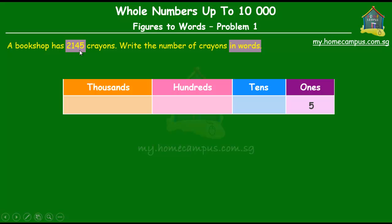Now five goes in the ones place because it's the smallest value digit, and after that we have the digit four that goes in the tens place, the one that goes in the hundreds place, and the two that goes in the thousands place.